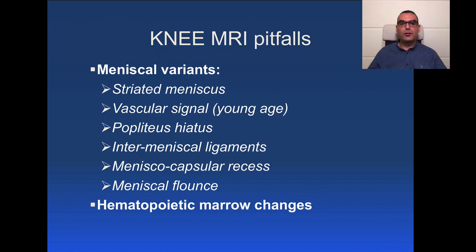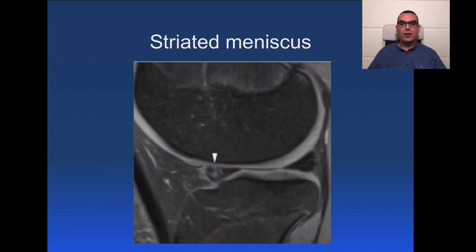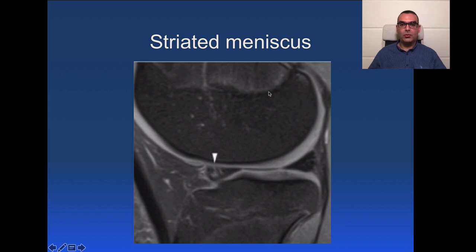First, let's review some of the common MRI pitfalls — normal variants that should not be mistaken for pathological changes. Number one is the striated meniscus. This is a normal striation, a normal striated hyperintense signal, seen at the anterior horn of the lateral meniscus. This is very common at young age, and you can notice the epiphysis is not yet fused. This is the normal meniscal striation.